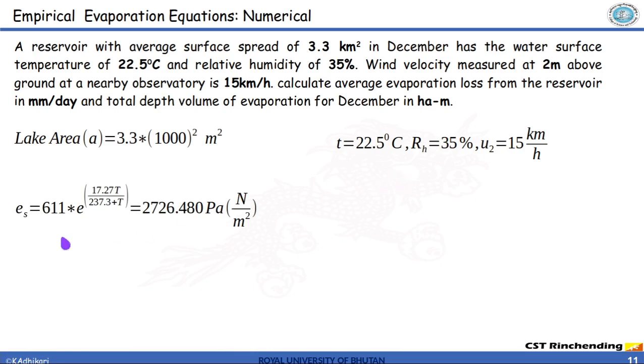Likewise, we can calculate the saturation vapor pressure. The equation to calculate saturation vapor pressure is given by this whereby you just have to substitute the value of temperature in degree centigrade and we get 2726.480 Pascals which is newton per meter square.